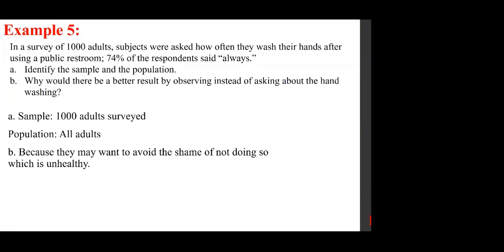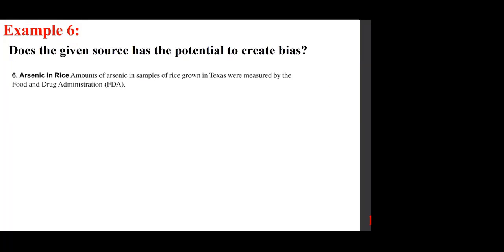We want to see if we have a potential bias by looking at the source. Arsenic and rice: amounts of arsenic in samples of rice grown in Texas were measured by the Food and Drug Administration. We probably have no problem because it comes from a decent source — the FDA.